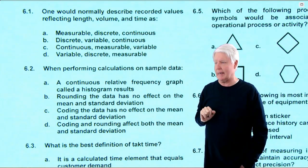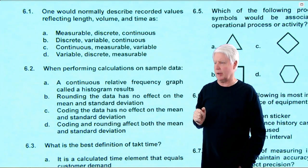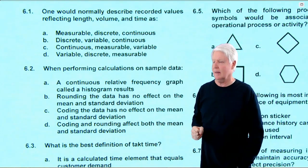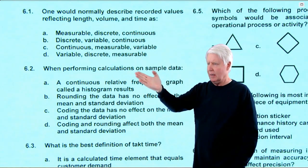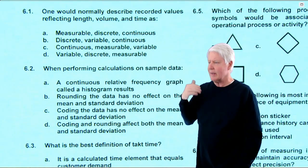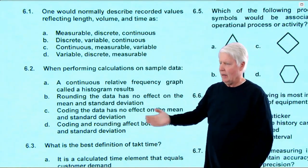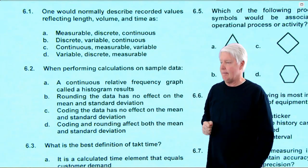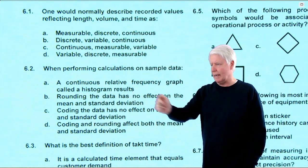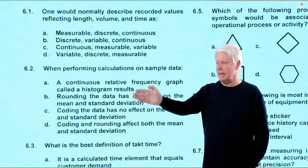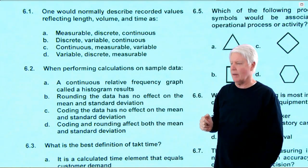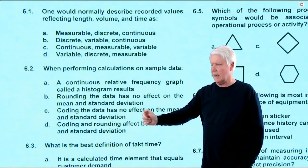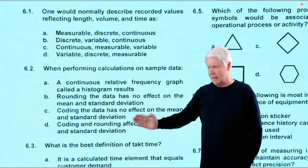Question 6.2: when performing calculations on sample data, which statement is true? 'A continuous relative frequency graph called a histogram results' — too many holes in that. 'Rounding has no effect on mean and standard deviation' — rounding can introduce error. 'Coding has no effect on mean and standard deviation' — let's go to the whiteboard. I believe it's C or D.